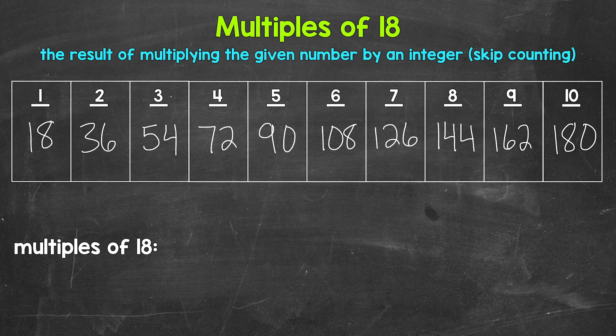Now do the multiples stop there? No, they continue on forever. Multiples are infinite. Now let's write these multiples in a list below. You'll notice we're just counting up by 18. Like I mentioned earlier, another way to think of multiples is to skip count. So we start with 18.